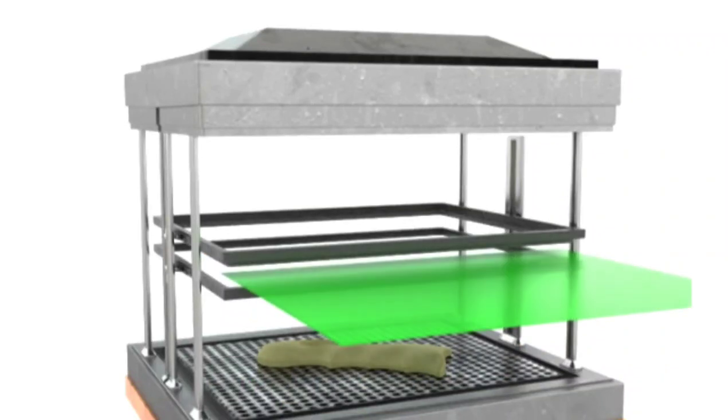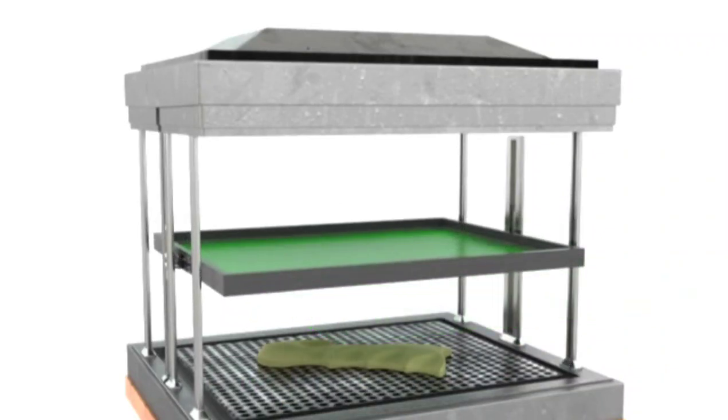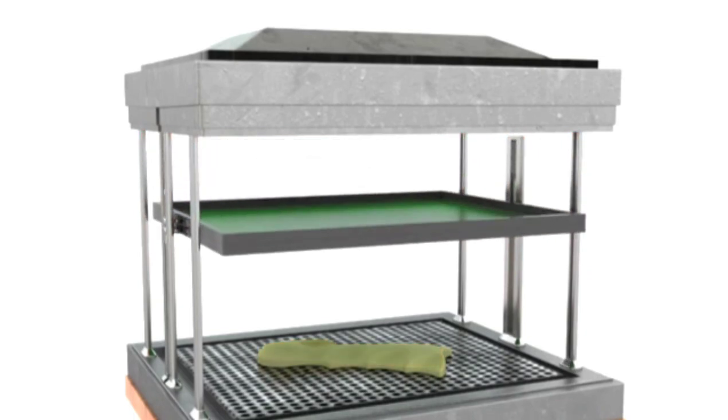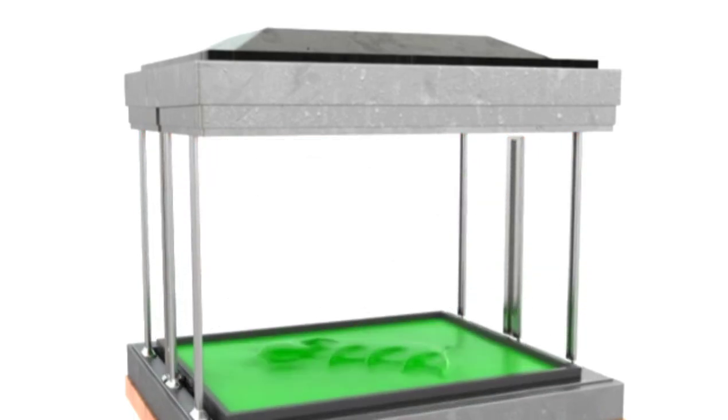In this application, a sheet of plastic is heated until it is malleable. Then a mold is applied and a vacuum is used to form the plastic to the mold.